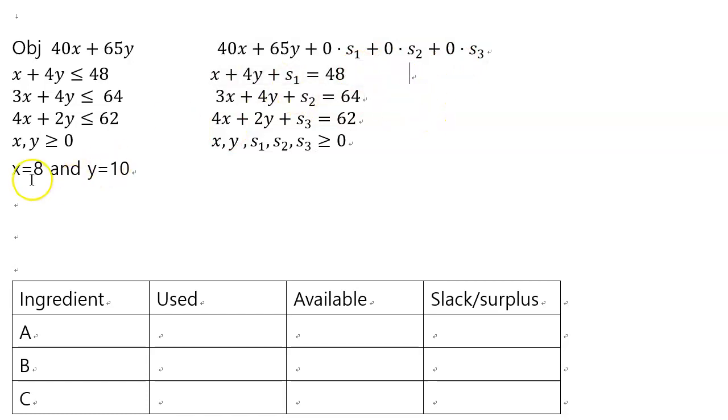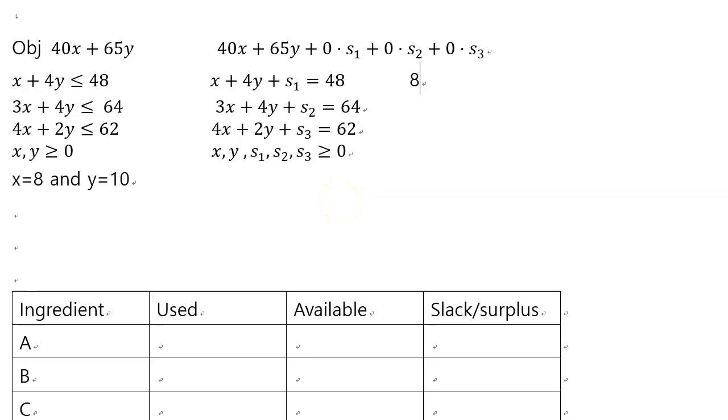First, if you plug in 8 and 10 into the first equation, we have 8 plus 4 times 10 plus s1 equals 48. So that's going to be actually 48 plus s1 equals 48, which means s1 must be 0.